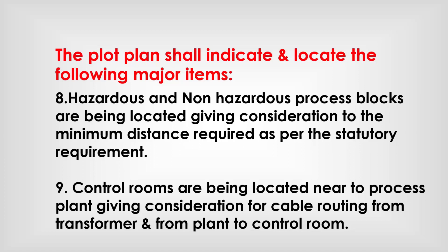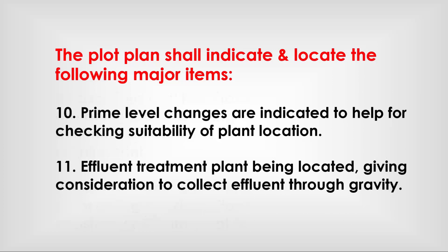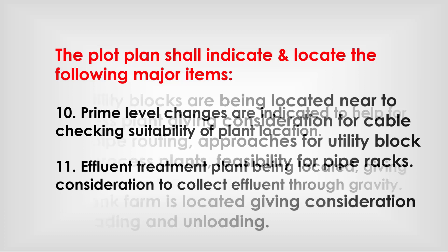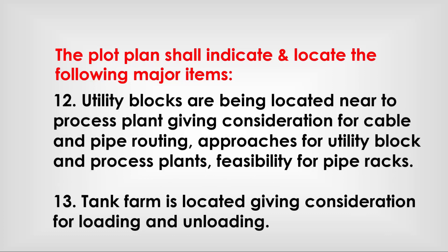Control rooms are located near the process plant, giving consideration for cable routing from transformers and from the plant to the control room. Prime level changes are indicated to help check suitability of plant location. The effluent treatment plant is located giving consideration to collect effluent through gravity. Utility blocks are located near the process plant, giving consideration for cable and pipe routing.